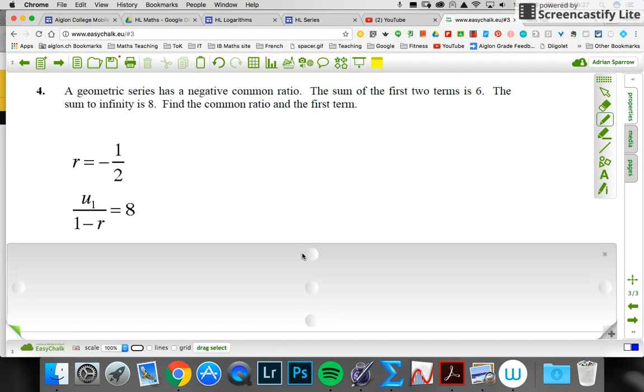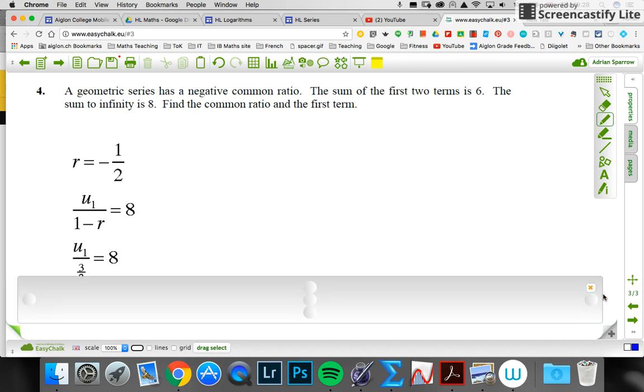From the first page, I had the sum to infinity: u₁ divided by one minus r equals eight. One minus the r, which is minus half, is going to give me three over two on the bottom. When I rearrange that, I get twelve.